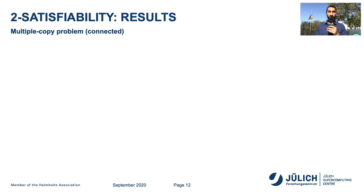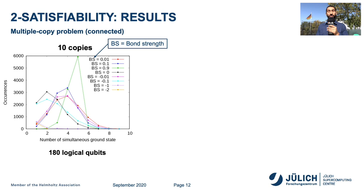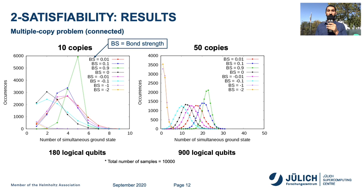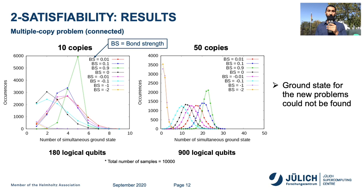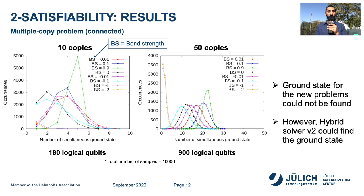Next, we show the results of implementing the connected multi-copy problems. First, results for 10 copies which have 180 logical qubits, where each color represents a different bond strength. Next, for 50 copies which had 900 logical qubits, these are the results. We note that the ground state for the new problems could not be found. However, the Hybrid Solver Service Version 2 could find the ground state.